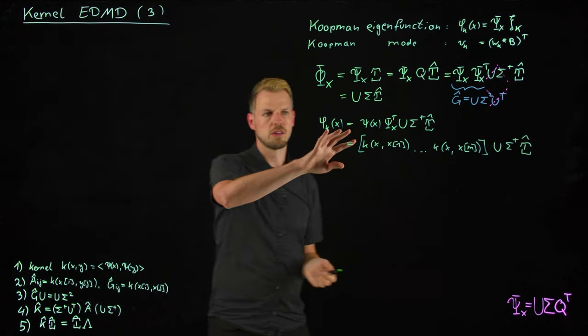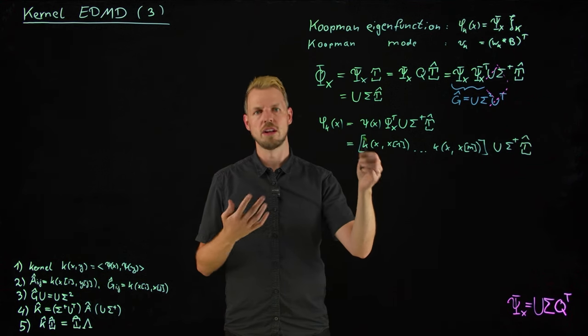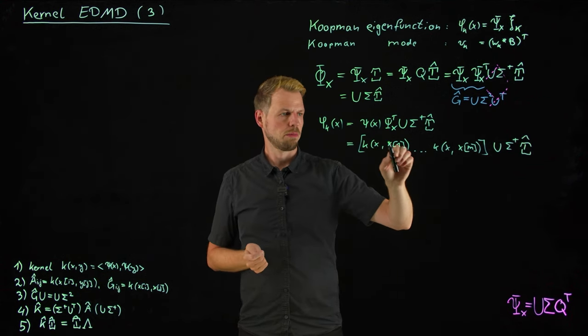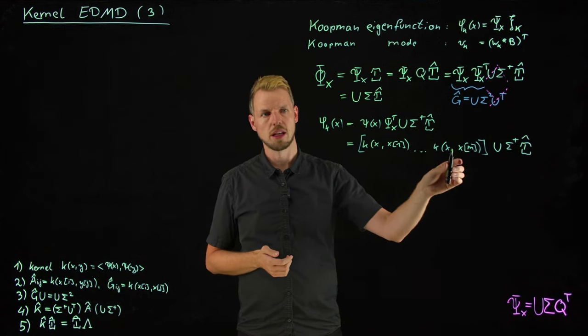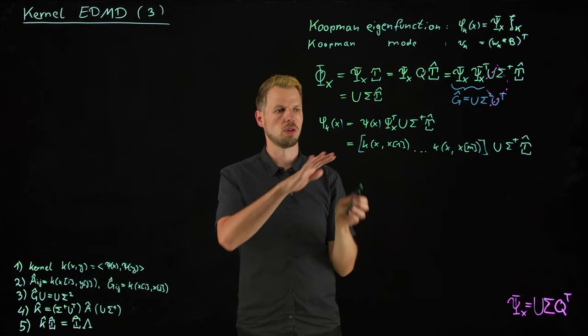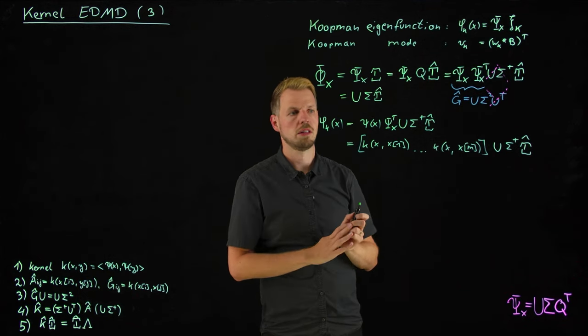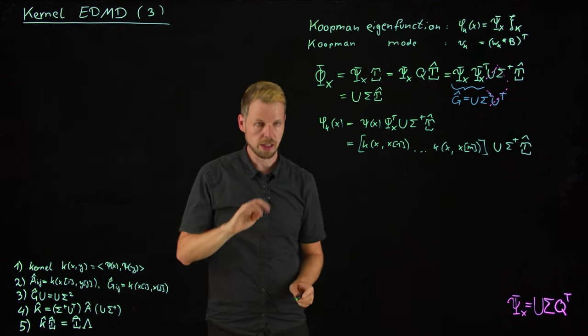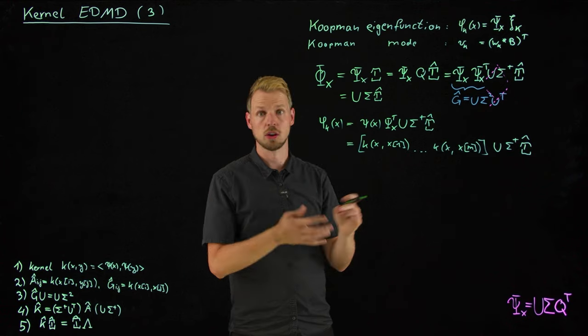So easy enough, this becomes kernel of x with x1 until kernel of x with xm. And then times u sigma and psi. So very straightforward, well known in all kernel techniques. New samples, the evaluation of new samples usually requires calling the kernel function with respect to all the existing samples and then measuring the distance between the new one and these ones. So we're here, eigenfunctions.